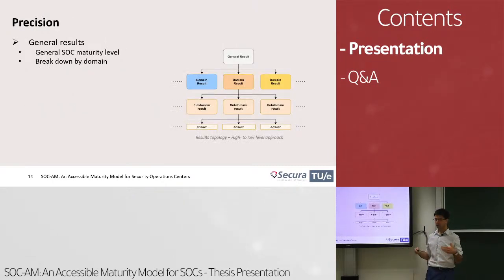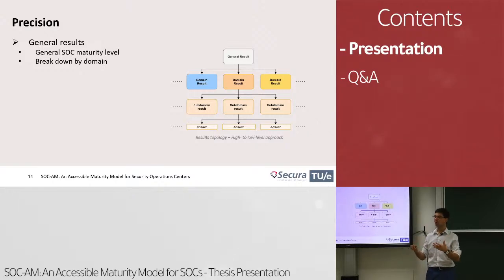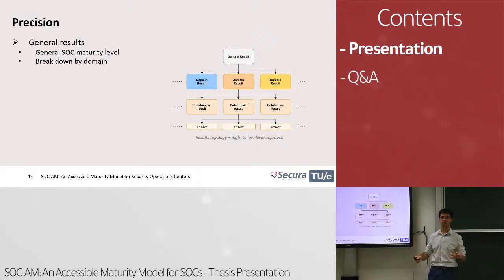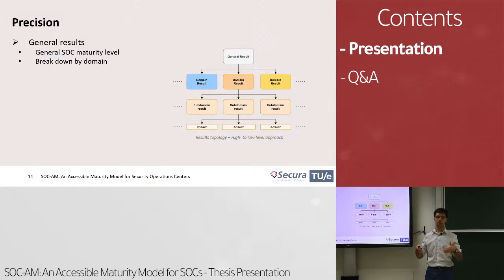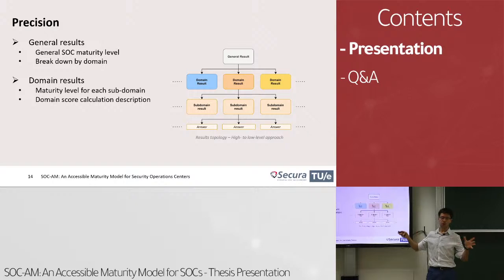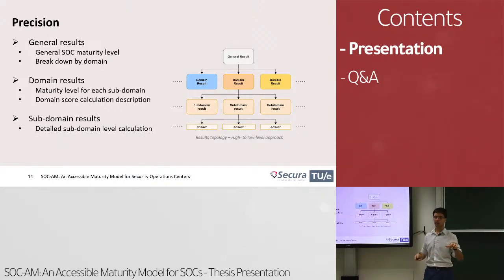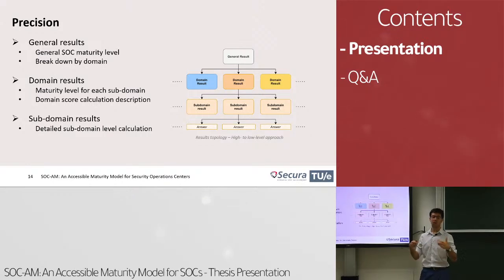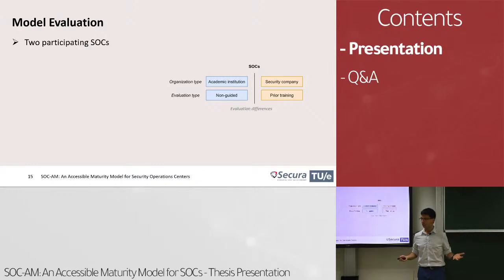For precision, we still have to keep accessibility in mind. The model uses a high-to-low level approach to results: the first result you see is one number — your overall SOC maturity. If that's not precise enough, you can further go into each domain and see the result of each subdomain and how they contribute to the domain grade. If you want even more detail, you can go to the subdomain level where you have results per answer and a gap analysis — though this is more advanced and reduces accessibility, it is fully optional, which balances these issues.